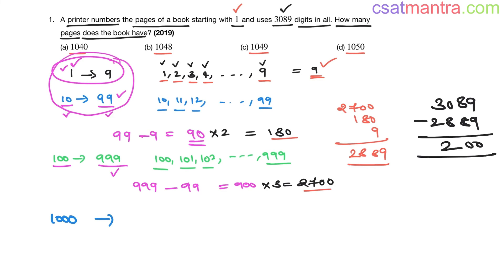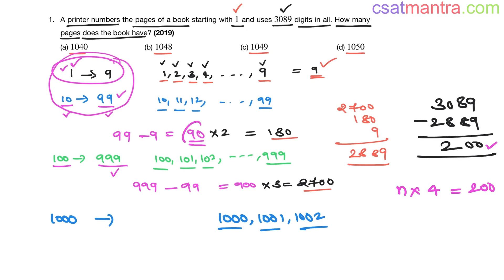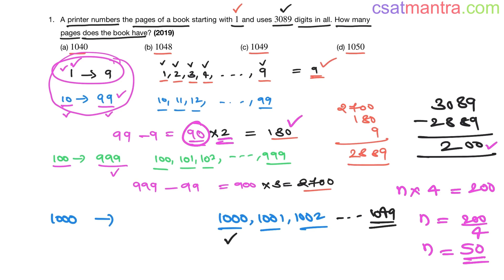The next page is 1000, which has 4 digits on each page. So how many pages are needed to account for 200 digits? Number of pages × digits per page = 200, so n = 200 ÷ 4 = 50 pages. Since page 1000 is already included, we need 49 more pages. So the last page would be 1049 — the book has 1049 pages.